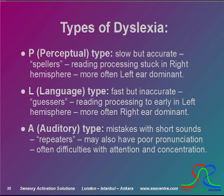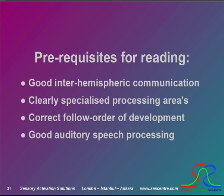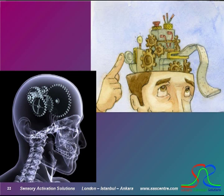We also see many children and adults that have been misdiagnosed with, for instance, attention deficit disorder, where the underlying cause is difficulties with reading and writing. We can now add a fourth item to the prerequisites for learning to read and write: we must have good inter-hemispheric communication, clearly specialized processing areas, correct follow order of the development in the brain, and good auditory speech processing. Now that we know a bit more of what goes on in the brain of the dyslexic child or adult, we can start to devise methods to overcome these difficulties. Here at Sensory Activation Solutions, let's have a look at how we can improve the communication between the two brain halves.